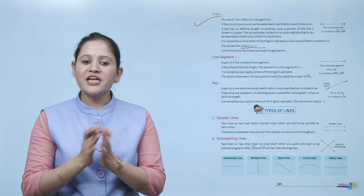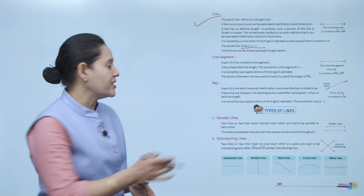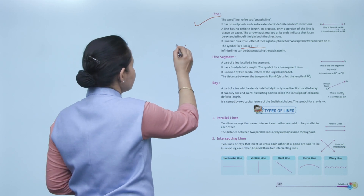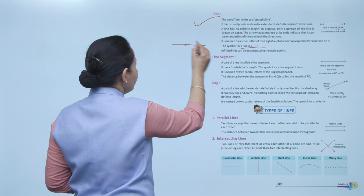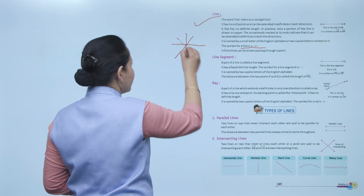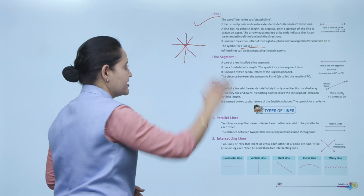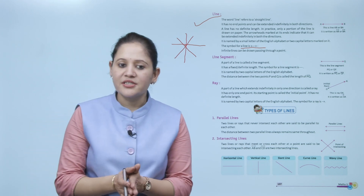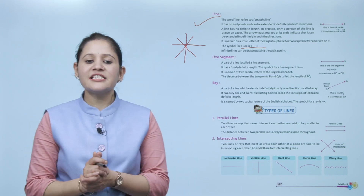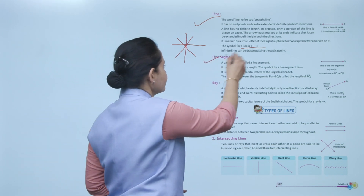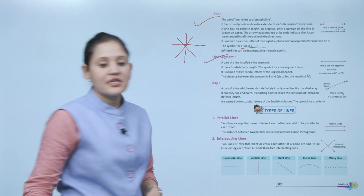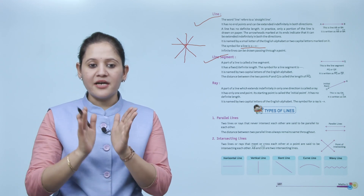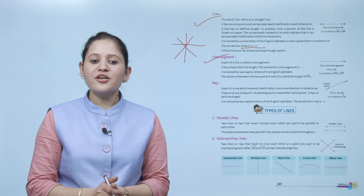Infinite lines can be drawn passing through a point. Suppose there is a point — we can draw infinite lines passing through it. Next is line segment. 'Segment' means a part — a part of a line is called a line segment.